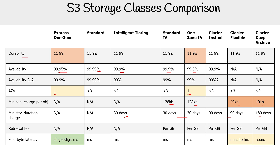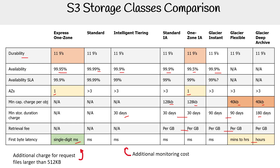Retrieval fees apply to Standard IA, One Zone IA, Glacier Instant, Glacier Flexible, and all the archival tiers. For first byte latency, Express One Zone is single-digit milliseconds, and everything else is milliseconds — even Glacier Instant. The Glacier archive tiers vary based on how fast you want your data. For intelligent tiering, there are additional monitoring costs to use the automated tier management. Express One Zone also has an additional charge for requests on files larger than 512 kilobytes, since they want you to serve up smaller files.